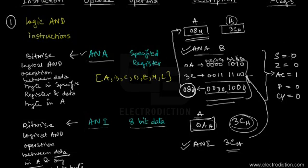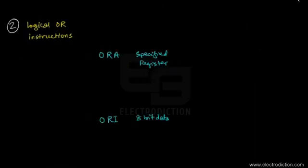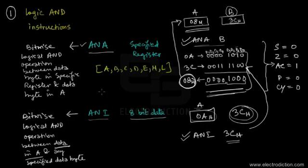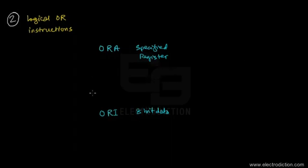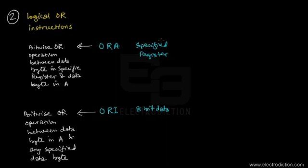This is how the flag bits are affected by the AND instructions. Now let's move on to the logical OR instructions. We have two of them: ORA and ORI. These are declared in the same way as ANA and ANI, with the only difference being that these perform OR rather than AND. ORA performs the bitwise OR between a data byte in a specified register and the accumulator data.